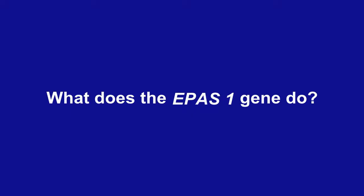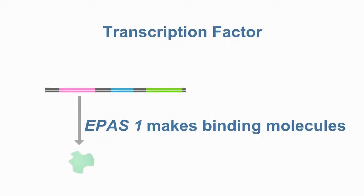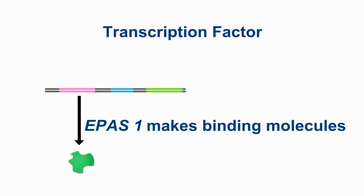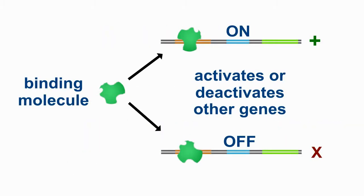What does the EPAS1 gene do? It's a gene that orchestrates the response to low oxygen environments. EPAS1 is a transcription factor. So what that means is that EPAS1 goes around and binds other genes either to express more of those genes or to stop the expression of some of the genes.